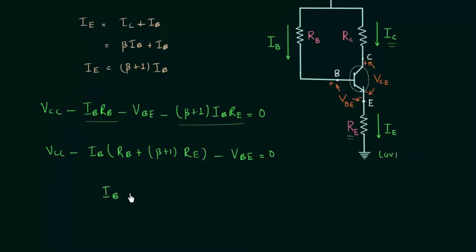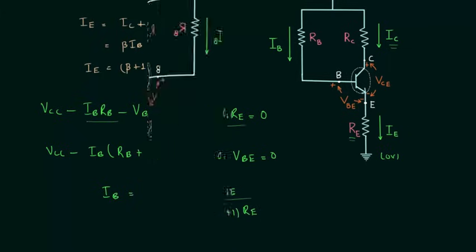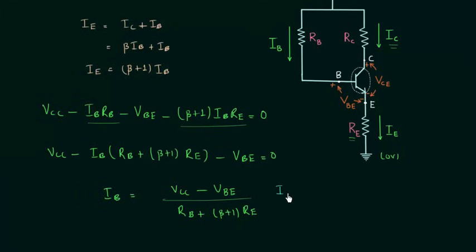IB is equal to (VCC minus VBE) divided by RB plus (β + 1)·RE. This is the expression for base current. The collector current IC is equal to β times the base current, so multiplying by β gives us IC.